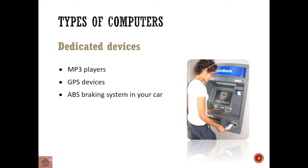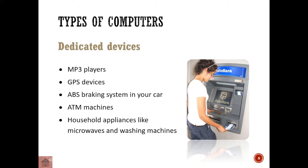ABS braking on your car only assists the braking system. Your microwave just microwaves; your washing machine just washes — those do just one thing. But ATM machines now do a lot more than one thing. If an ATM only lets you withdraw and check your balance, it qualifies as a dedicated device. But if you can check statements, print them, and deposit money, it's no longer doing only one thing — it's not a dedicated device. You just need to know the difference.